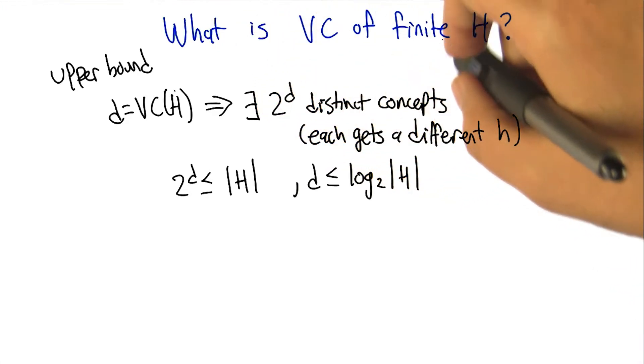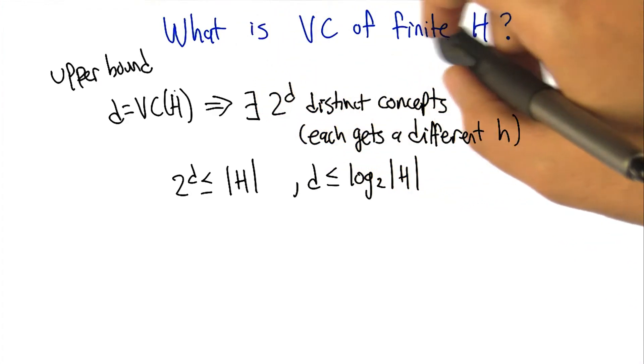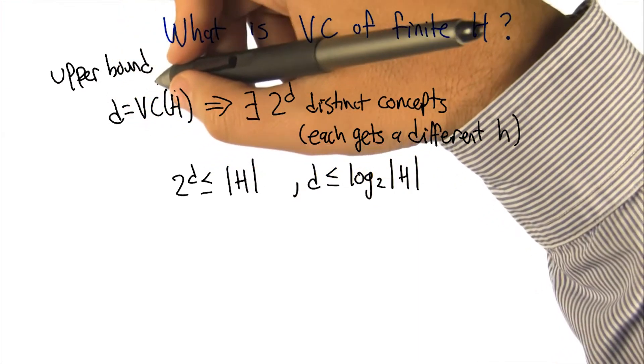So we can actually work out what the VC dimension of a finite H is. In fact, it's easier to just think about it in terms of an upper bound.